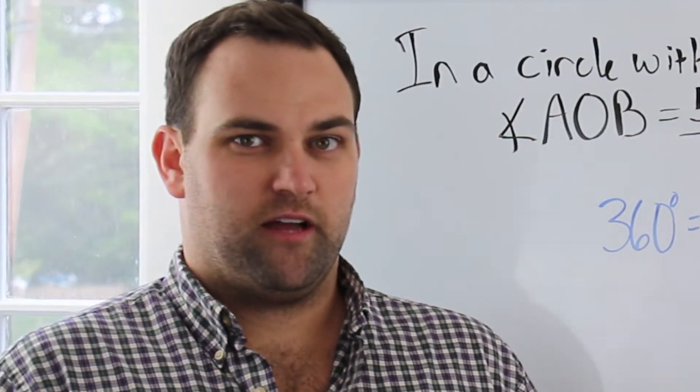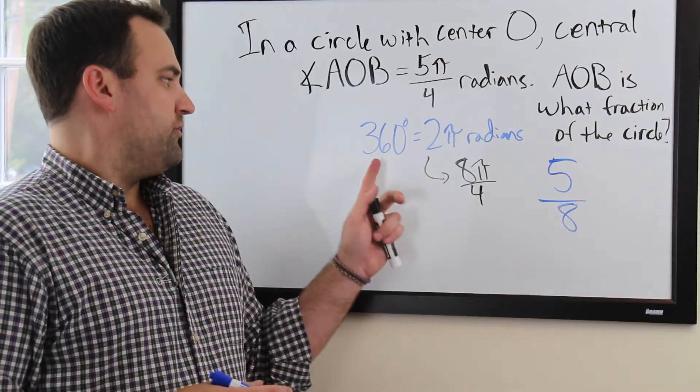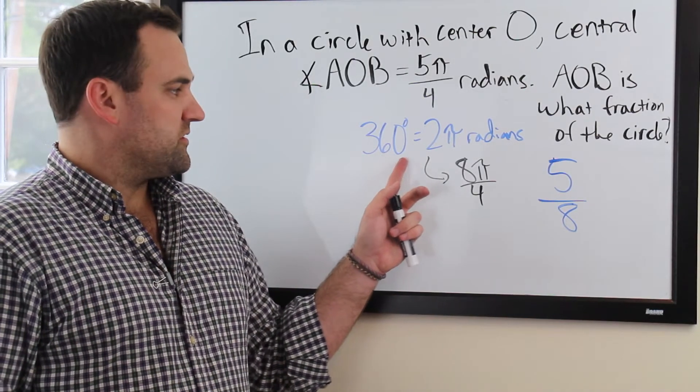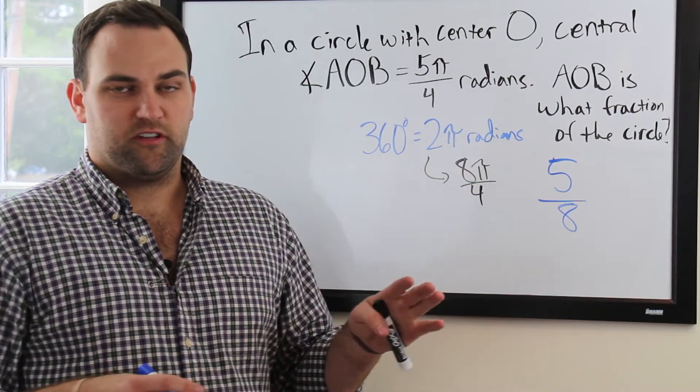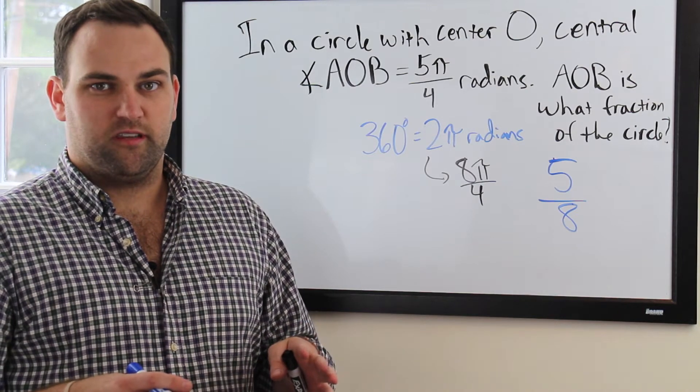So remember, even if you've never had radians in class yet, if you remember that 360 degrees in a circle is 2π radians, you'll be able to solve pretty much any radians problem you're going to see on the SAT.